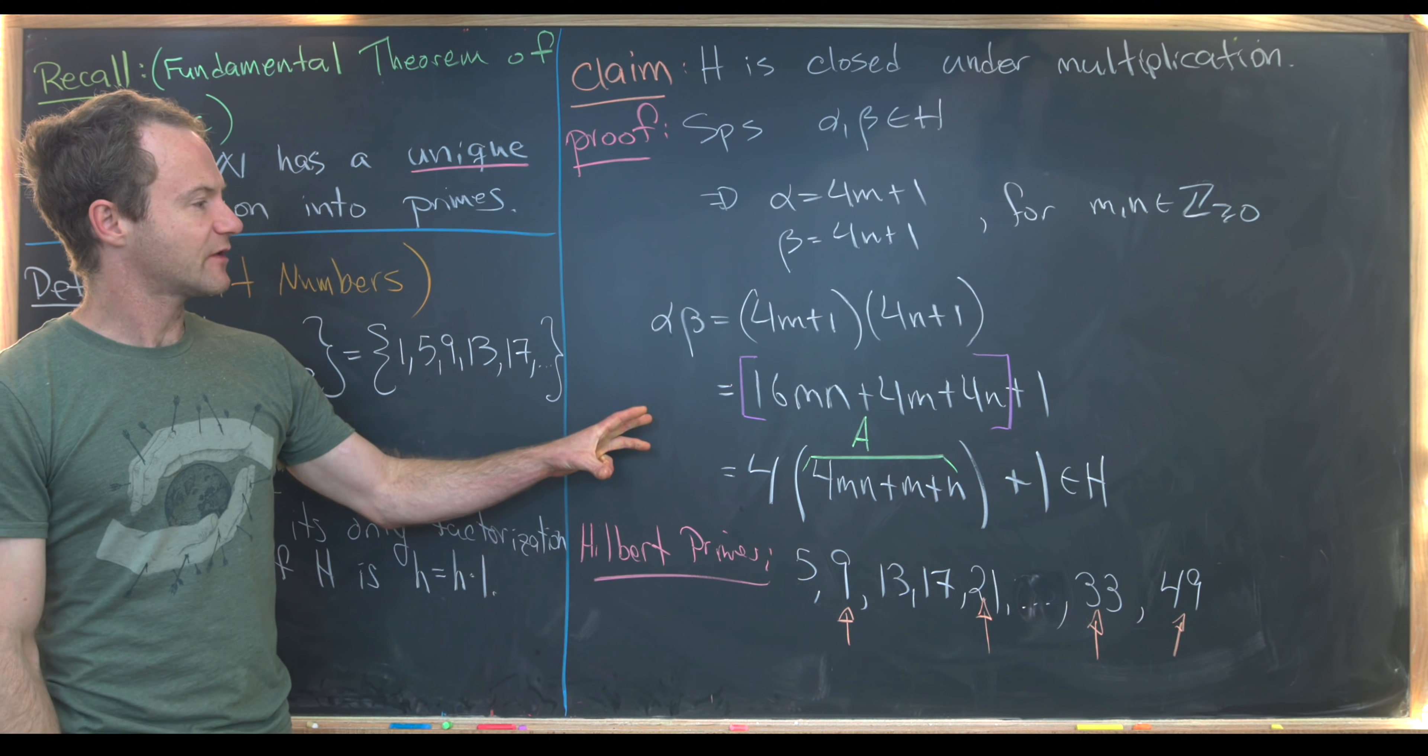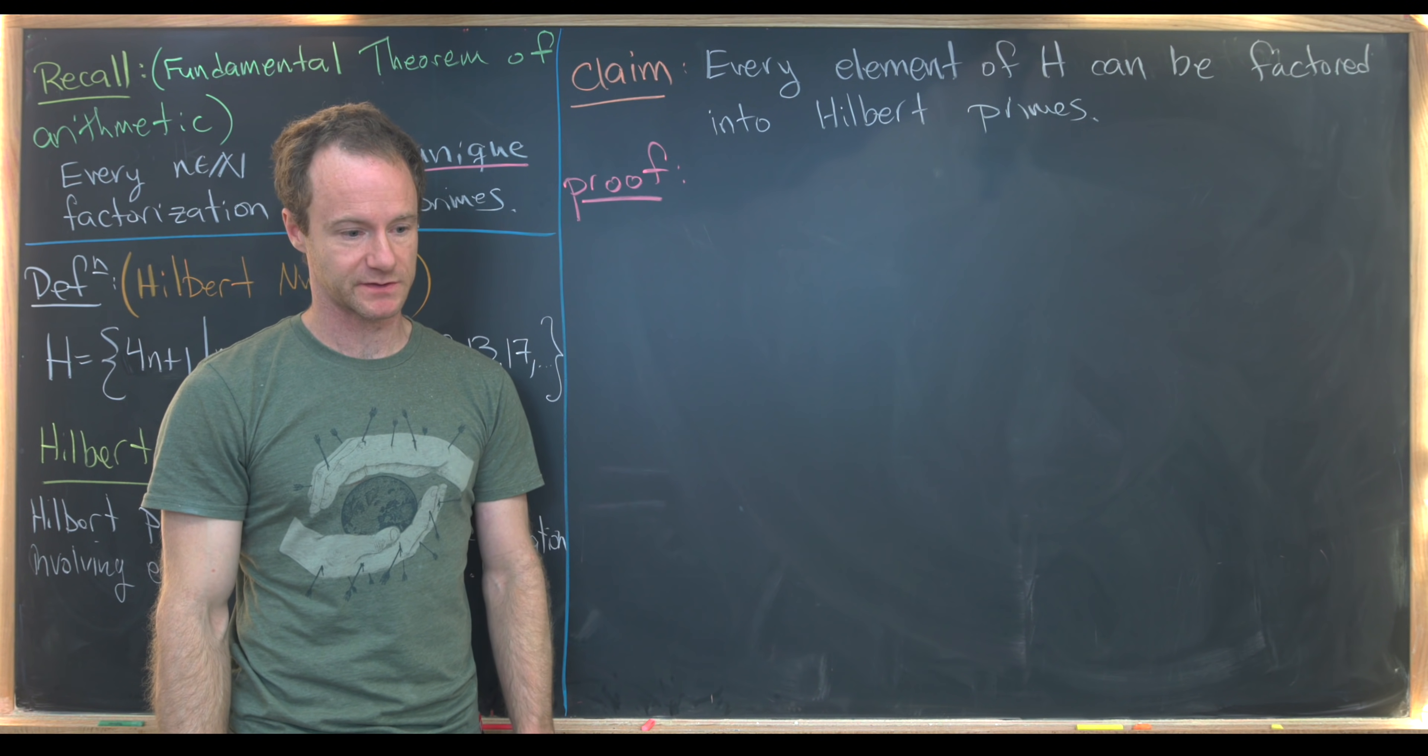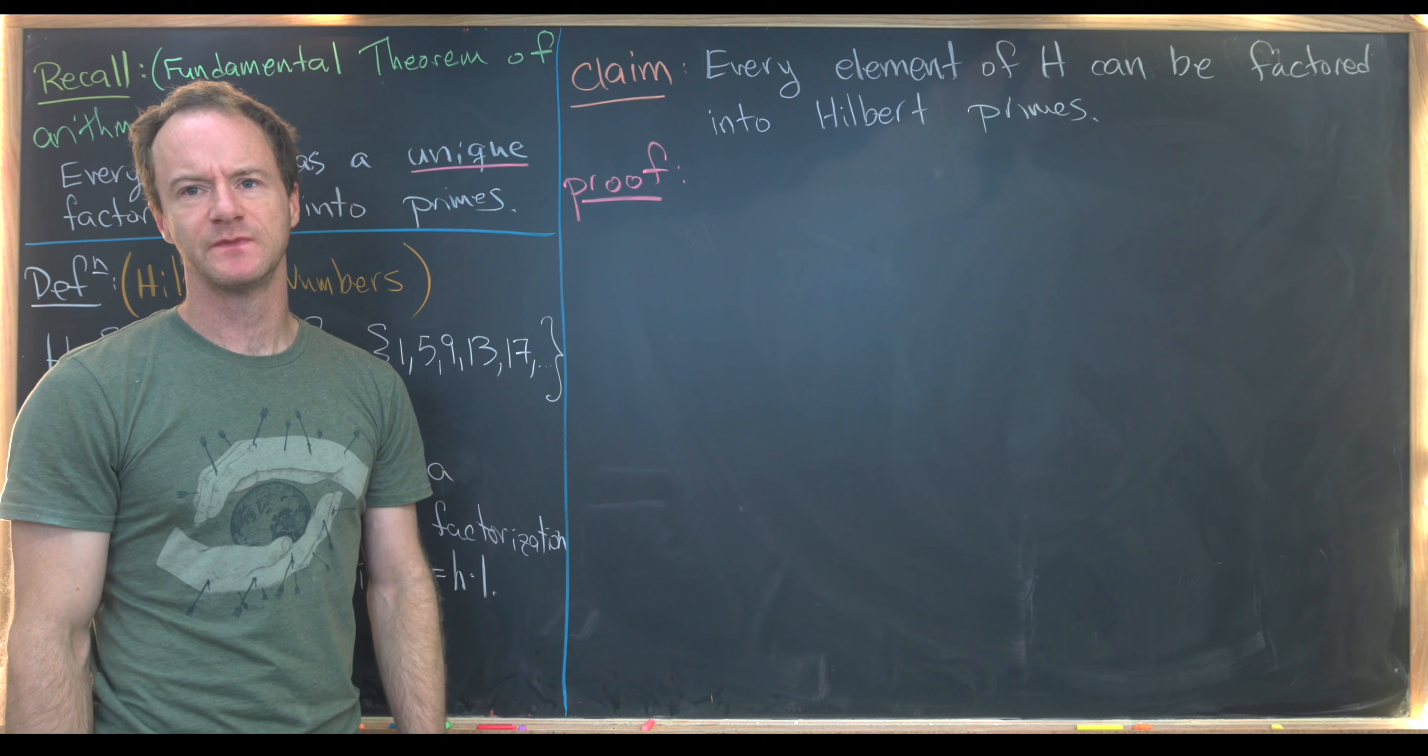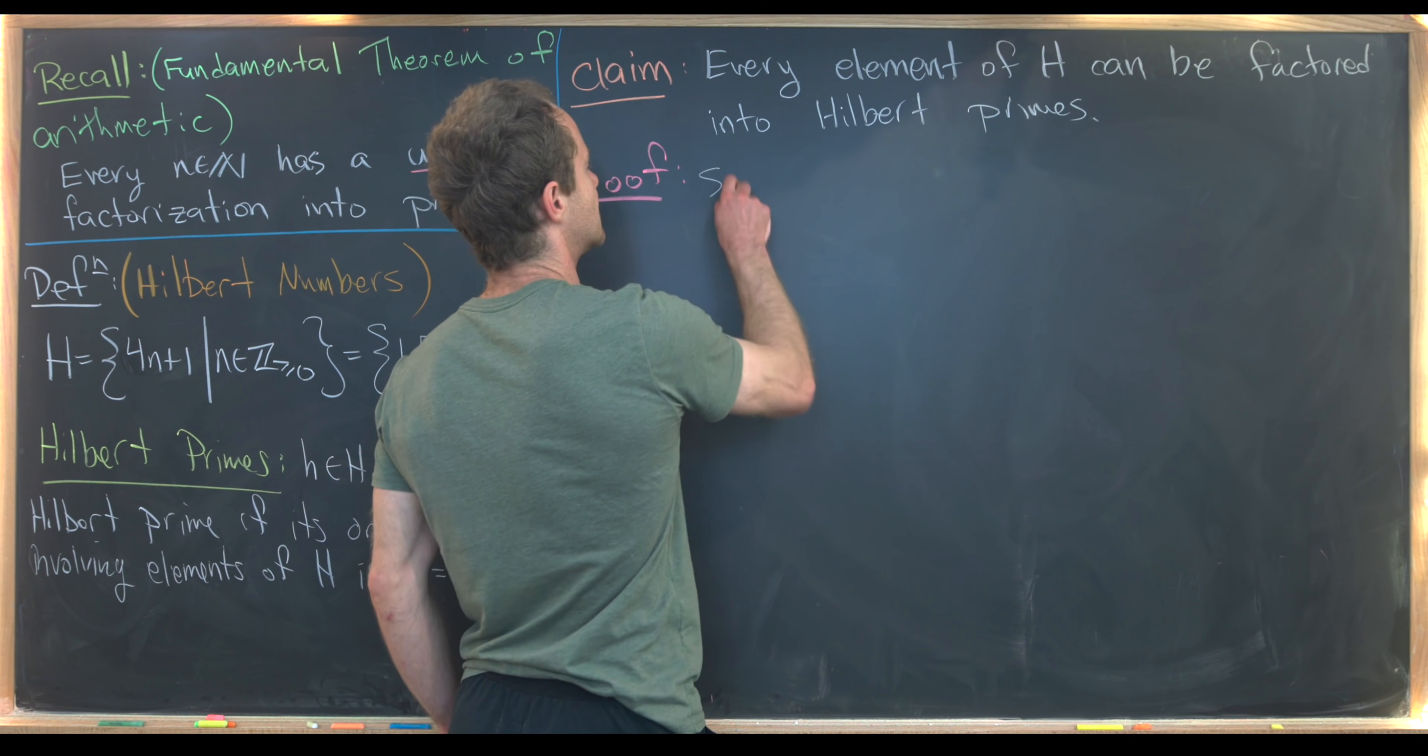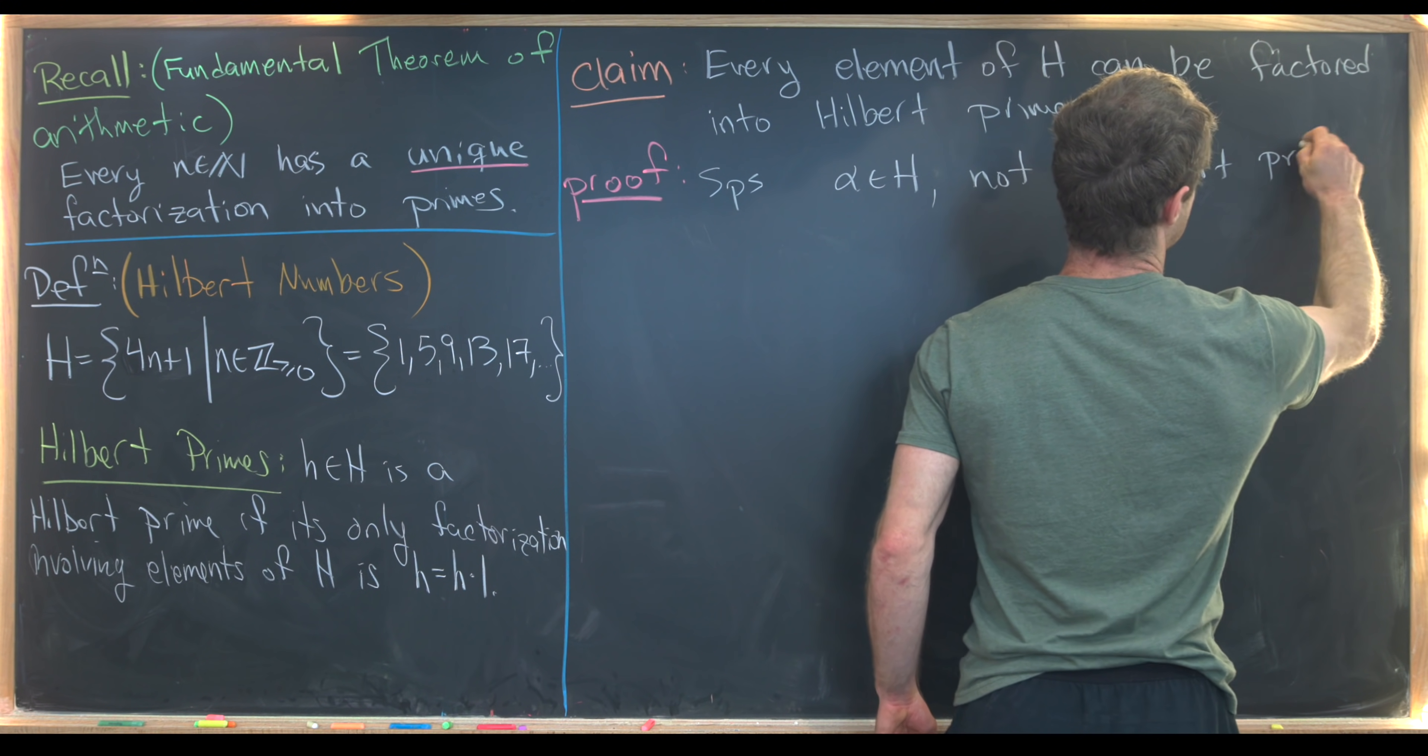So now that we've taken care of this, I want to prove another claim. We're continuing to draw parallels between normal primes and Hilbert primes, and thus natural numbers and Hilbert numbers. Our next goal is to prove that every element of H can be factored into Hilbert primes. We're actually going to use the regular fundamental theorem arithmetic as a tool here, although I think you could prove it from scratch. So let's maybe start with alpha in H, not a Hilbert prime.